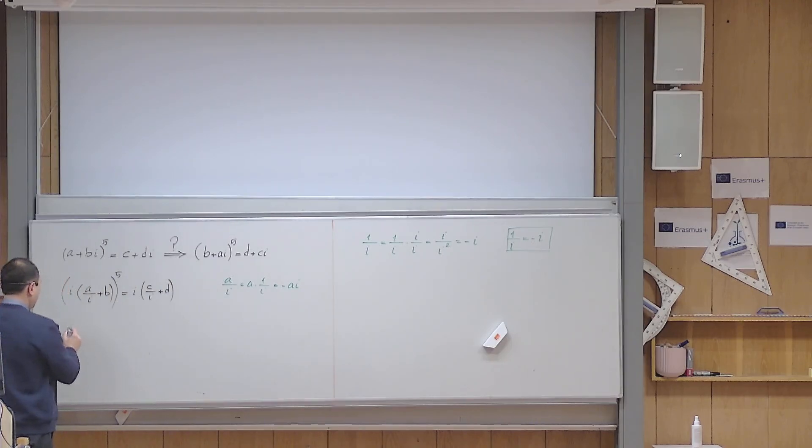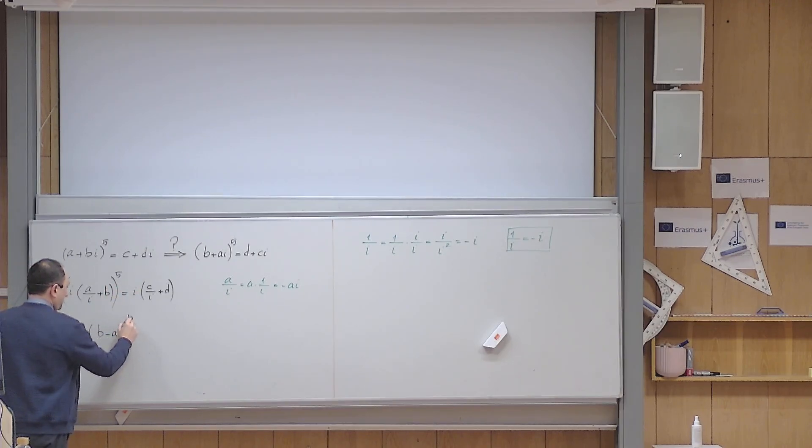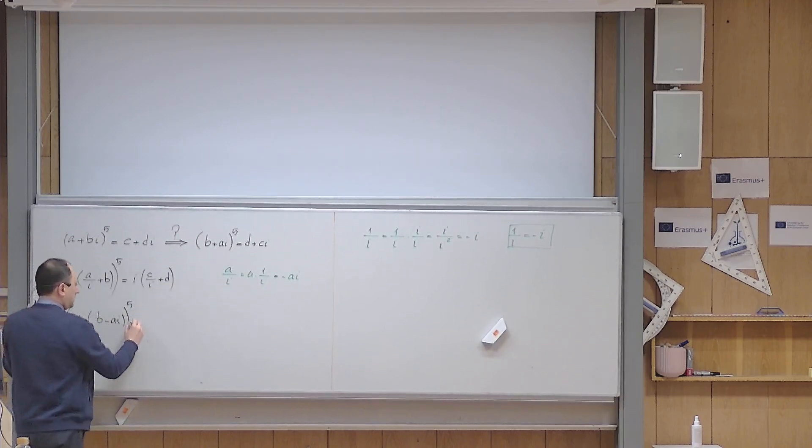Okay, but if I want to write it, I will write it like this. So this b I write first because I want to write it in a standard form, so this is now the real part. a over i becomes minus ai, so I put it here, and of course I still have the fifth power.